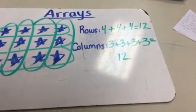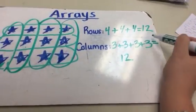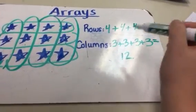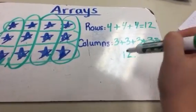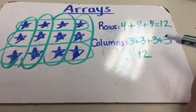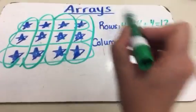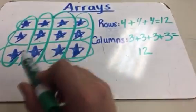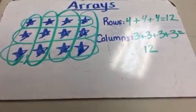You are in good shape if these two numbers match, because that means that you got the same amount of stars in both the rows and the columns.